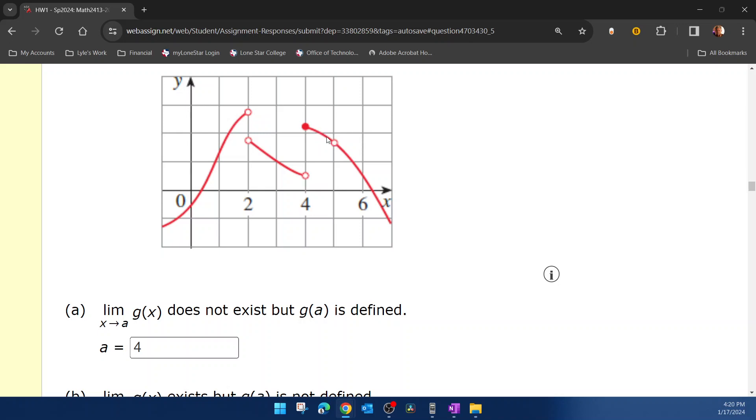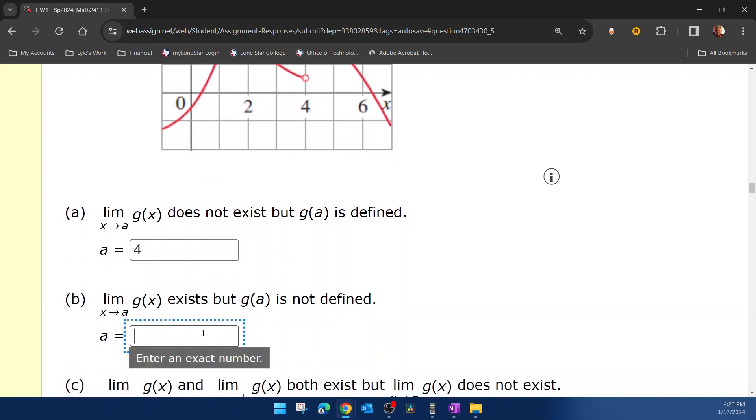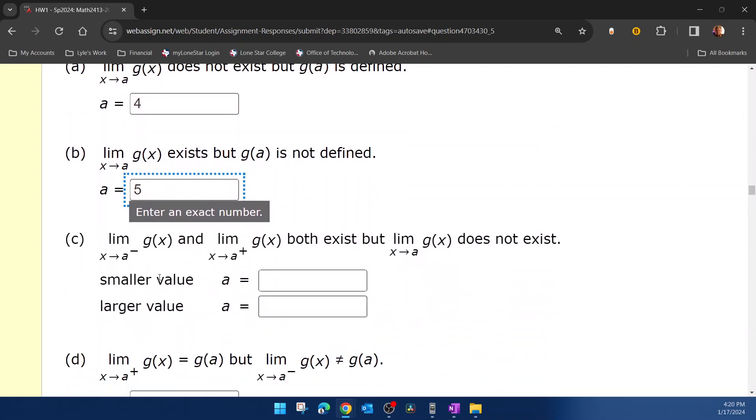But notice if I come in from the left and the right, I do approach a height of about 1.7 or so. I'm going to approach the same height. I'm approaching this height, but the graph is not continuous there. There's a break in the graph. So we're going to say that that is 5, where the limit does exist but the function value doesn't.